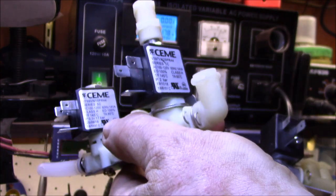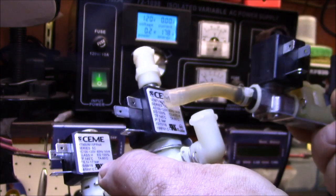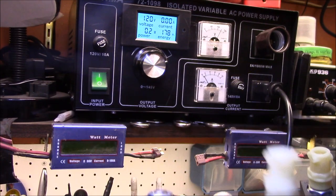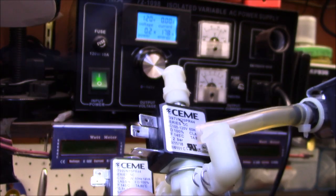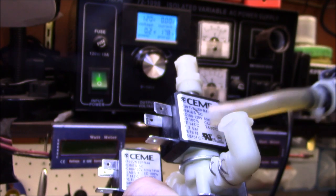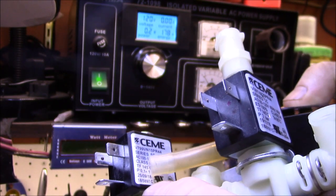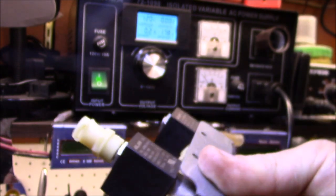Now the one difference I notice: so on the new solenoid block, this is a 2-bar rated solenoid, and this one is 17 bar on the old solenoid block.